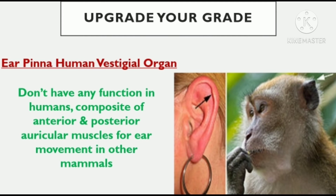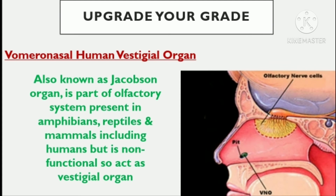The fourth important human vestigial organ is the ear pinna. The ear pinna is non-functional in humans. It is composed of anterior auricular muscles and posterior auricular muscles. In other mammals, excluding humans, it is important for sound localization, identification, and expression of emotions. In animals, it acts as an external stimuli receptor involved in sound reception behavior, but is non-functional in humans and is present in the human body as a vestigial organ.